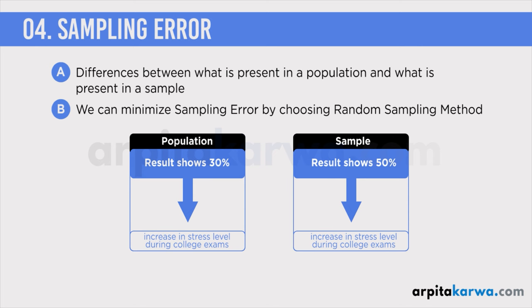This shows that there is a sampling error, because the failure to choose a proper sample has skewed the results of the experiment. The only way to completely eliminate sampling error is to collect data from the entire population, which is often very costly and time consuming. However, in order to minimize sampling error, we should use random sampling methods — probability sampling methods — which we are going to look at in the next lecture. Remember that sampling as a process is very important, because if sampling is not done properly, the sampling error is going to reflect in the research and the entire research results will be affected.